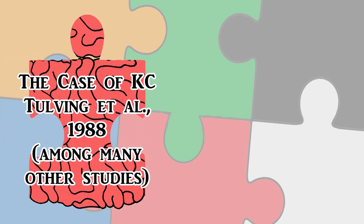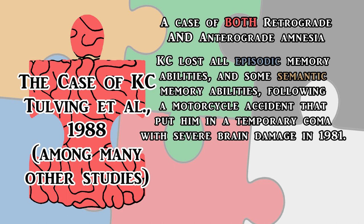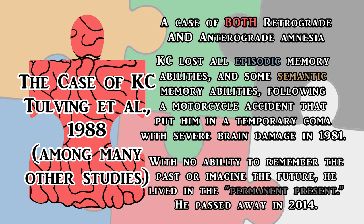It is also possible for a person to have both retrograde and anterograde amnesia at the same time. The most famous instance of this came about because of a man in a motorcycle accident in 1981. This person was called K.C. and was studied extensively by memory researchers. Following the accident, he lost his episodic memory for all events he had experienced over the course of his life, although he retained some semantic knowledge about himself, his parents, and other facts. K.C. was described as living in the permanent present due to both losing old memories and having extreme difficulties forming new ones. When asked to think about his past or his future, he described his mind as blank.